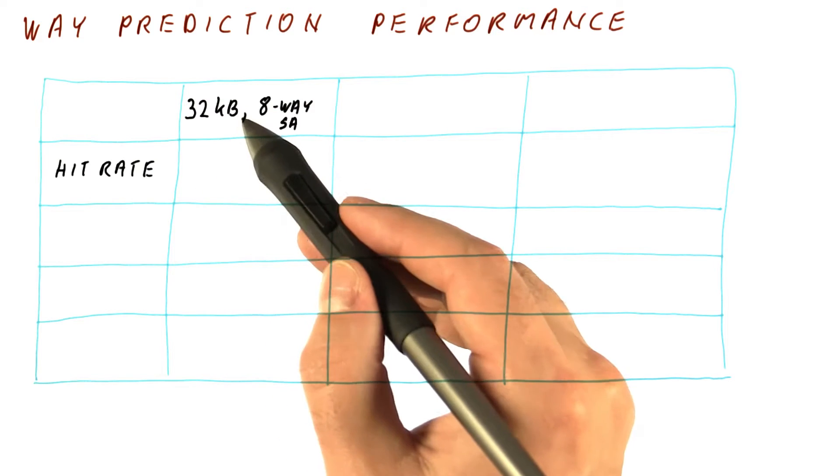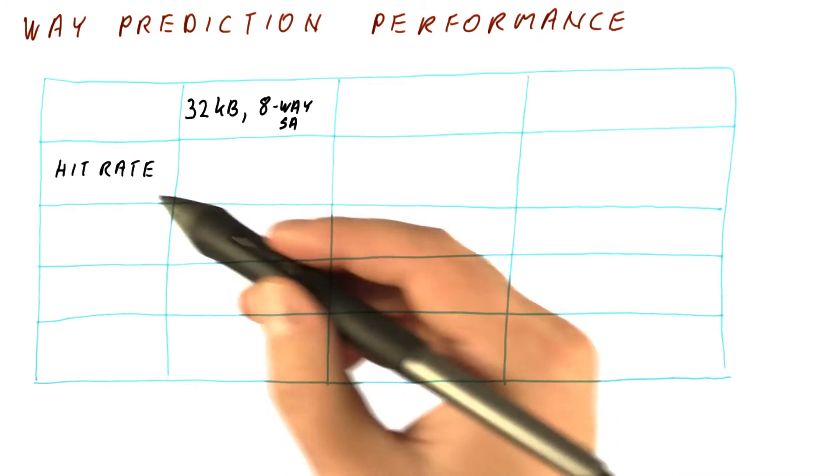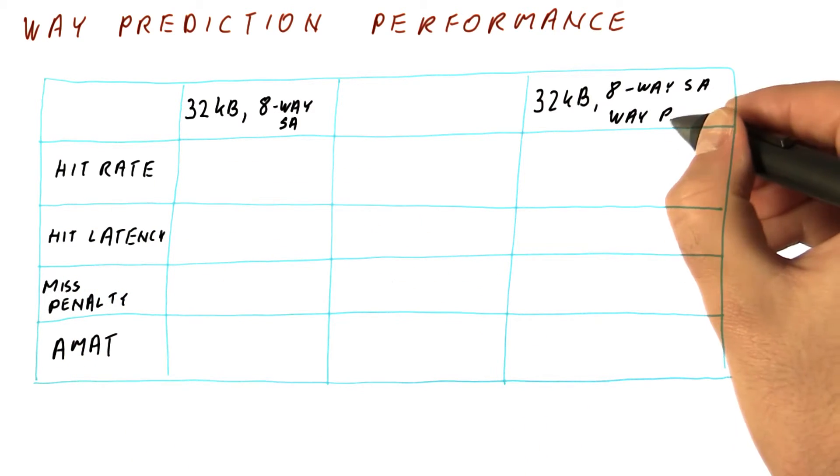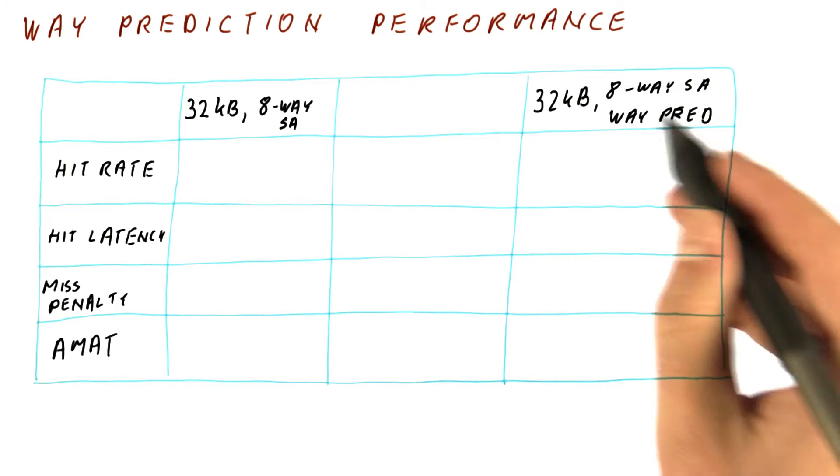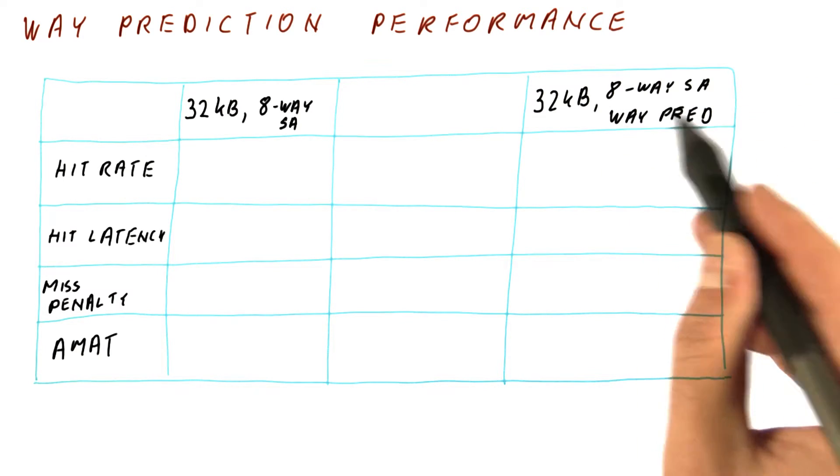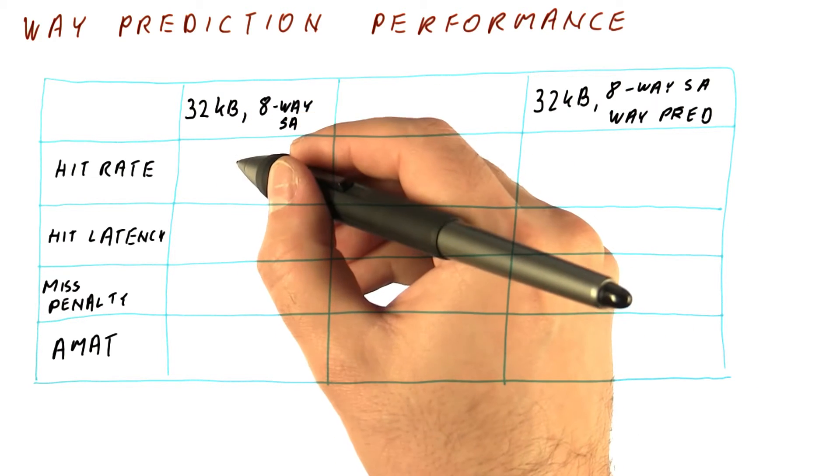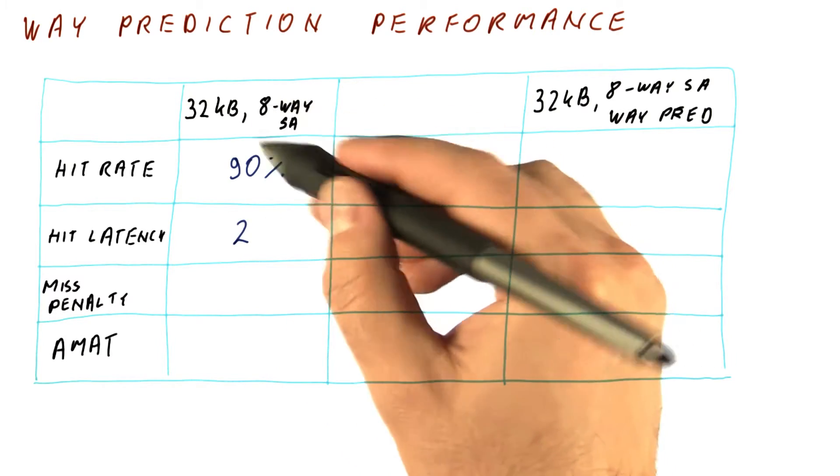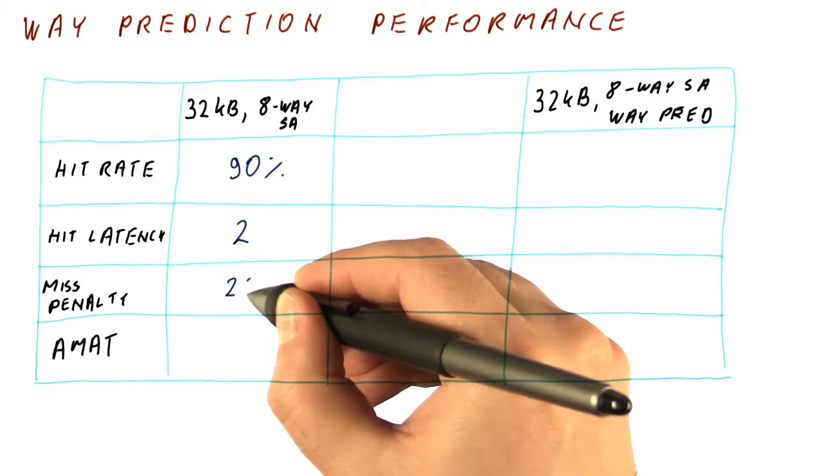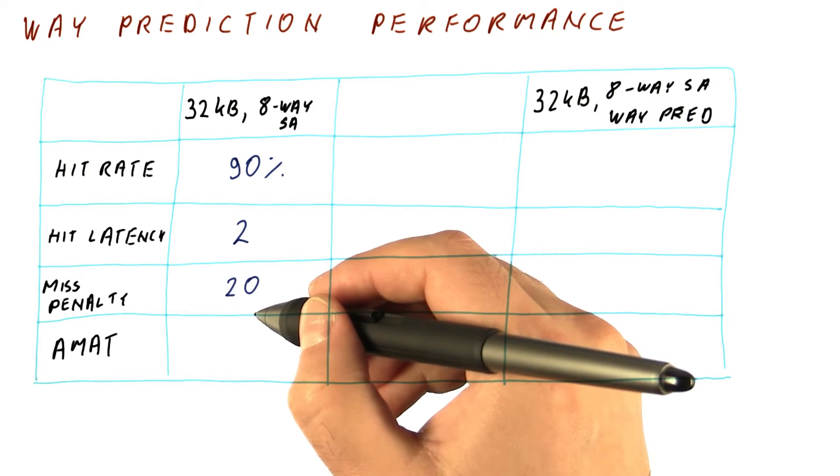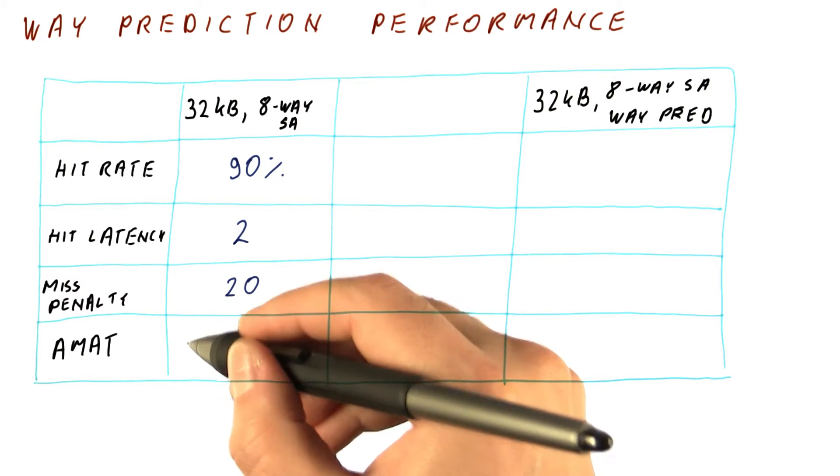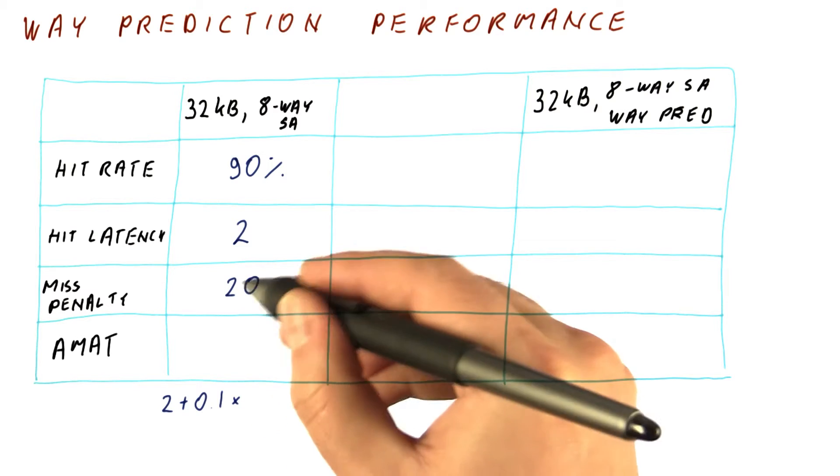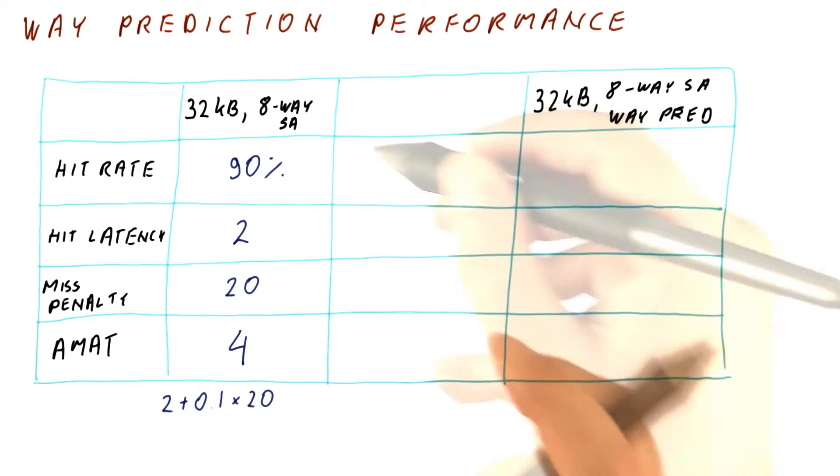Let's look at a basic 32 kilobyte eight way set associative cache. Let's look at its hit rate, hit latency, miss penalty, and the overall AMAT. We will also look at a 32 kilobyte eight way set associative cache with way prediction. The hit rate of this cache, let's say it's around 90%. The hit latency might be two cycles because it's highly associative. The miss penalty would be 20 cycles. And the overall AMAT would then be two for the hit latency plus 10% of the time we have the miss penalty, and we get four here.